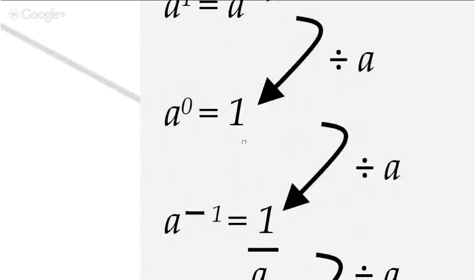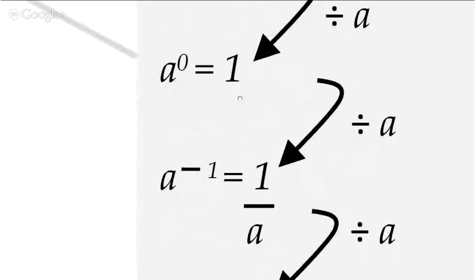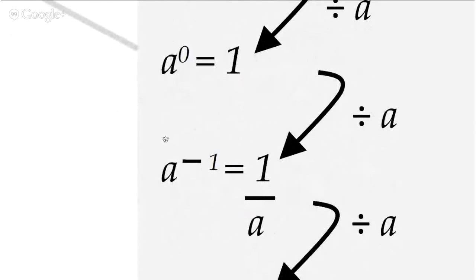Now let's move on to negative powers, which means you keep doing the same process and keep going further down. So after a to the power of zero equals one, if you go one further level down, you get a to the power minus one. How do you get to that level? You do one divided by a again, and you get one over a. So a to the power minus one becomes one over a, which is like one over a to the power of one.